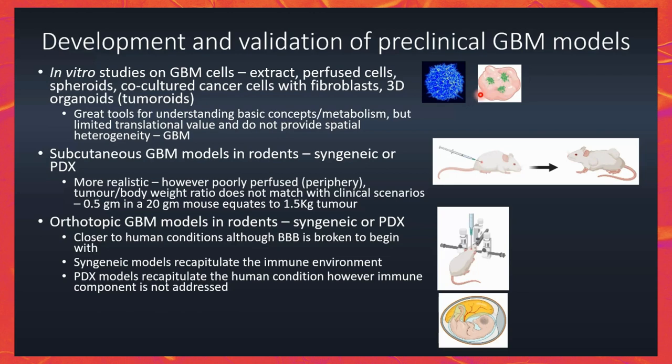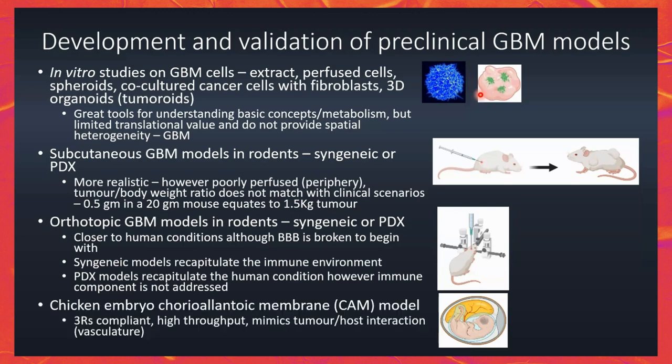Regulatory mechanisms and costs are becoming prohibitive these days. The NC3Rs — Reduction, Replacement, and Refinement of Animal Use — has also led to using the chicken embryo CAM model as an alternative, and I'll be talking a little bit about that.